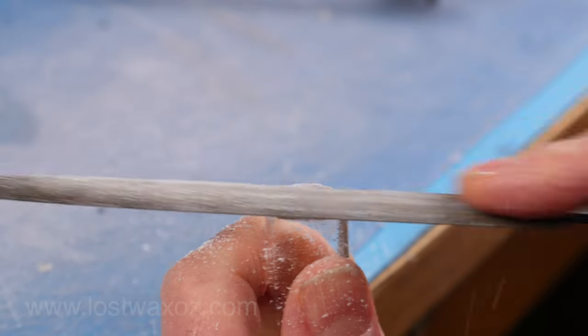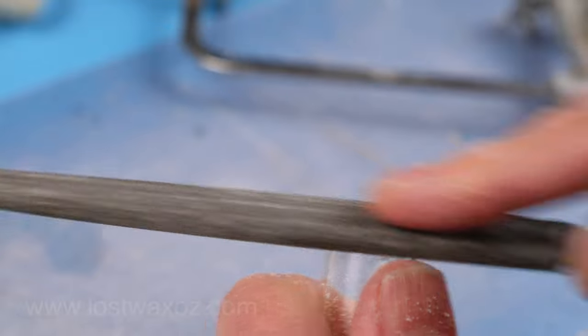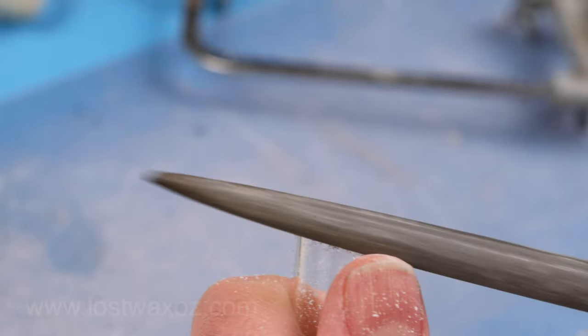File the end so it's nice and level then file a bevel all the way around the end of the tube. I'm not sure why but that's how it is in the movies.